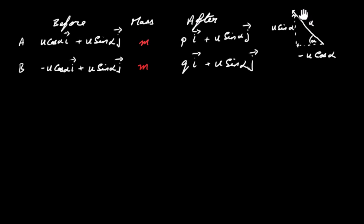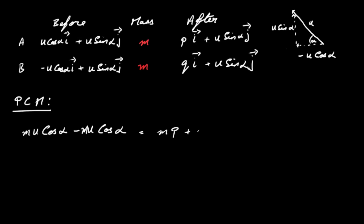We now form two equations using simultaneous equations to solve for P and Q. Using conservation of momentum in the i-direction: M·U cos(α) + M·(-U cos(α)) = M·P + M·Q. The left side is zero, so dividing by M gives P + Q = 0. This is equation 1.